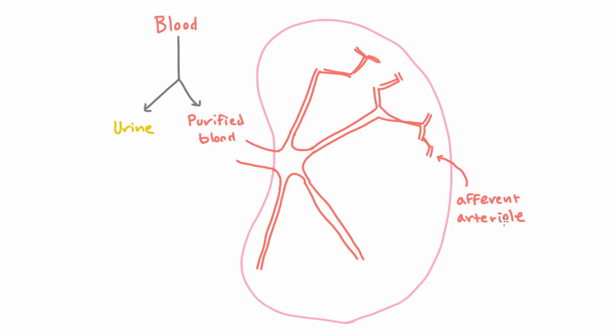Now what does afferent arteriole mean? Well, the word afferent means going towards. So you can ask yourself, what is each afferent arteriole going towards? Each afferent arteriole goes towards a little globular structure that we'll talk a lot about. For now we'll just name it - it's called a glomerulus. And as we'll soon discuss, the glomerulus is where the magic of creating urine first begins.